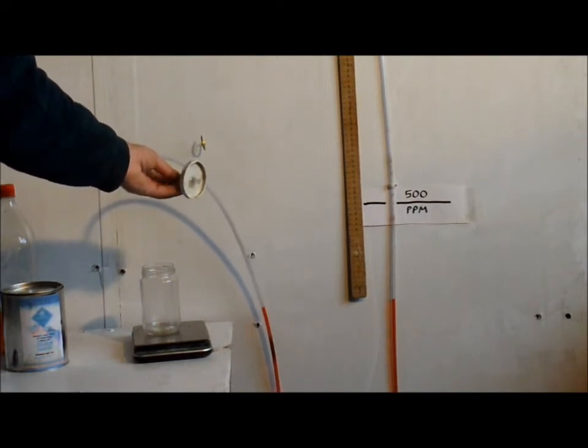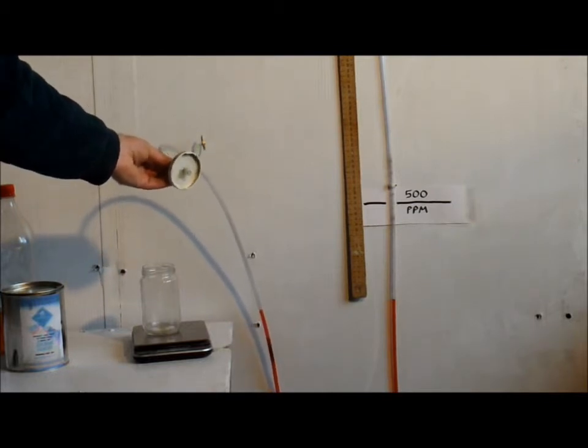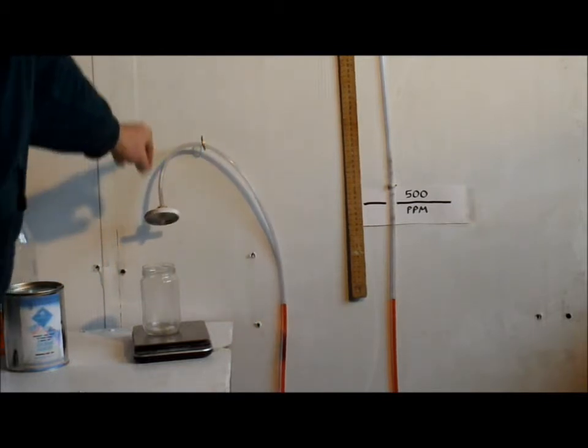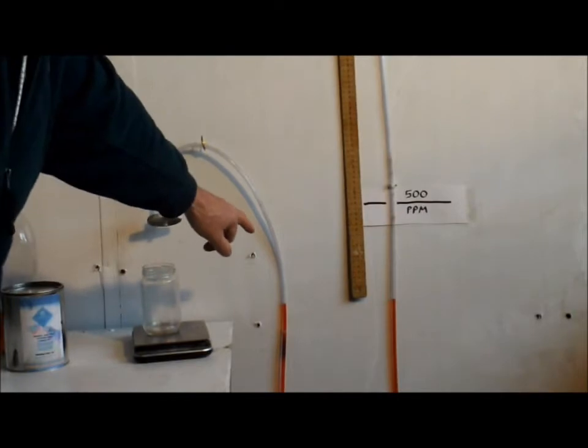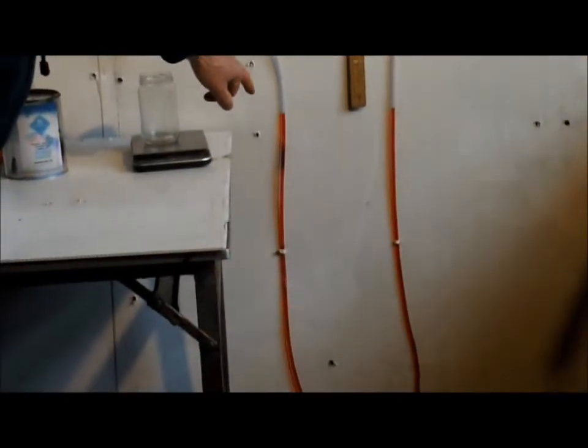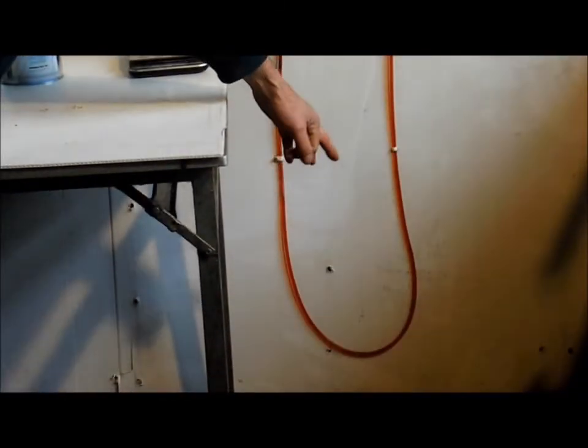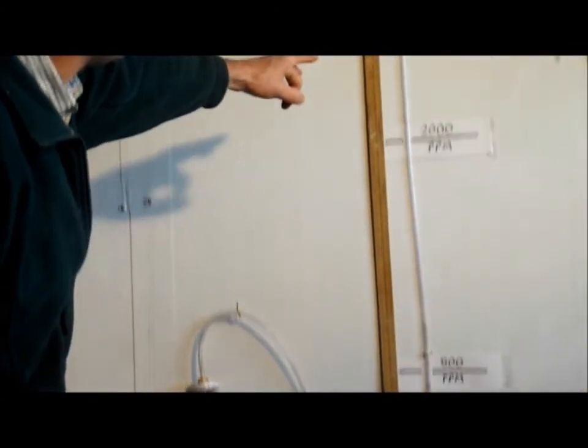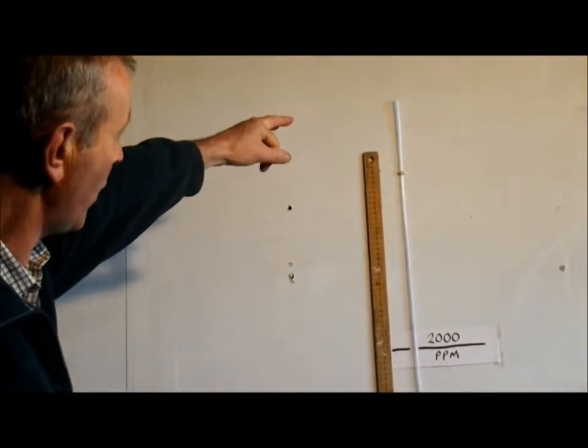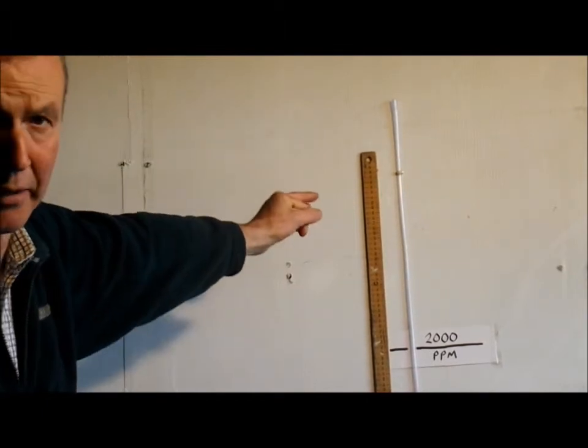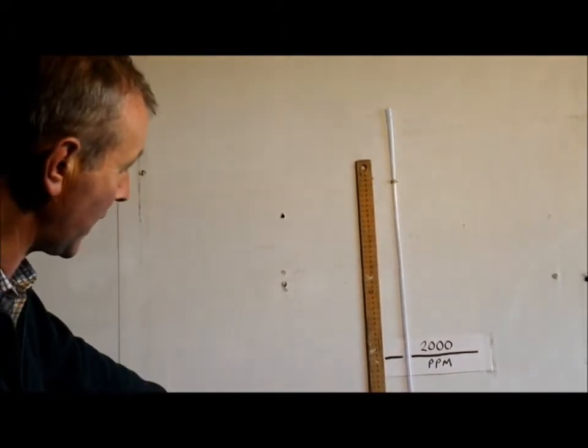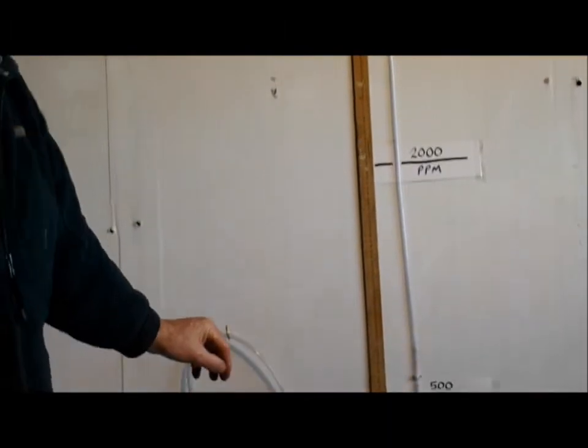Once it has set, arrange the tube down here in a loop, going down about 2-3 feet, coming back up again and then going up the wall about another 3-4 feet. You can fix it in place with small cable clips.